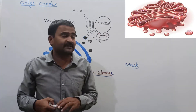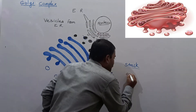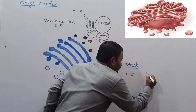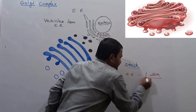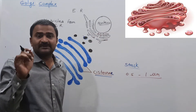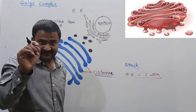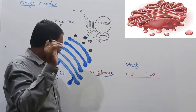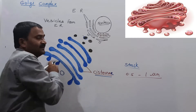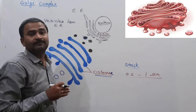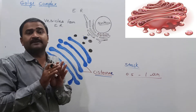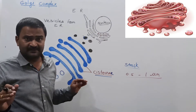The cisterni have about 0.5 to 1 micrometer in diameter. The Golgi apparatus contains a varied number of cisterni.